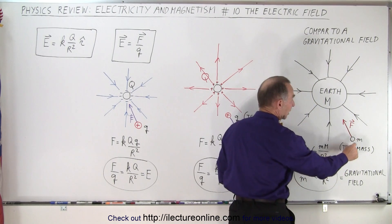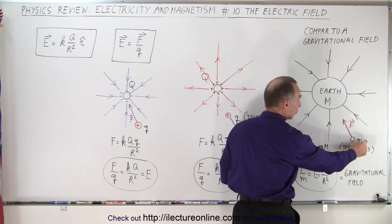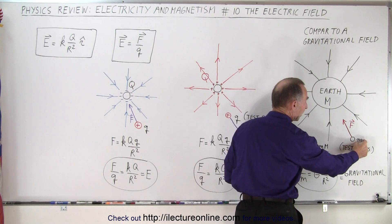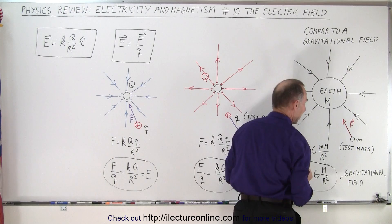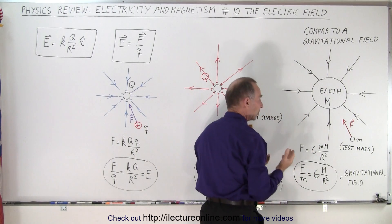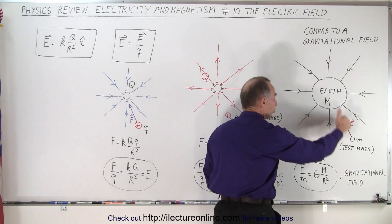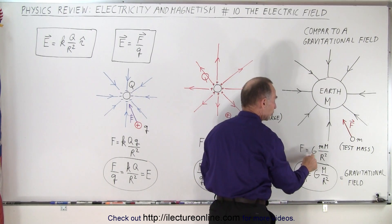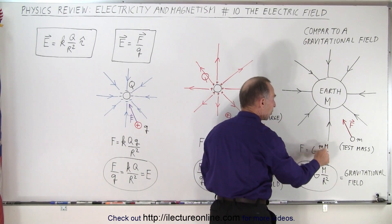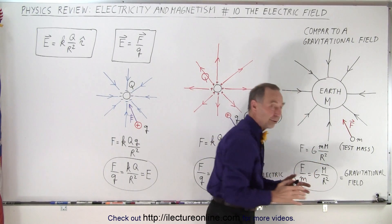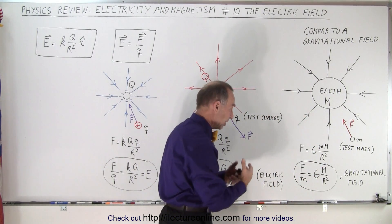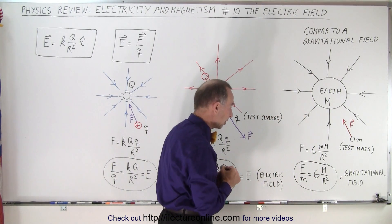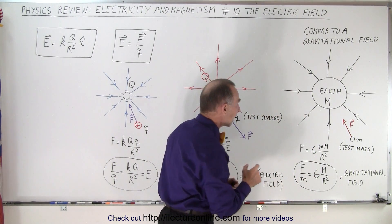We take a test mass with mass m and measure the force on it. We can then say that the force between the two is equal to GMm over r squared. And of course that is Newton's law of gravity, which most of us are familiar with.